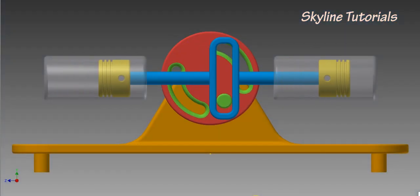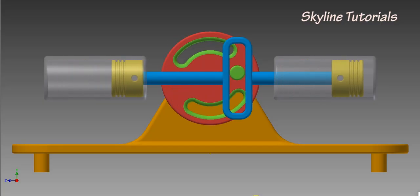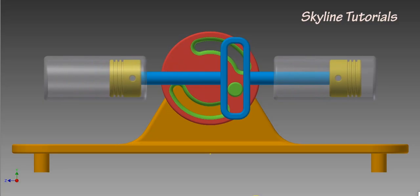The scotch yoke mechanism, also known as the slotted link mechanism, is used to convert the linear motion of a slider into rotational motion.